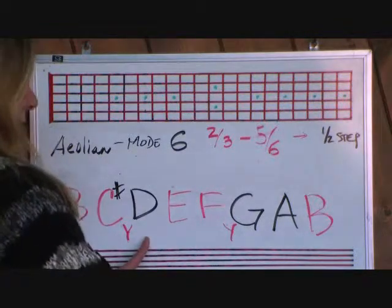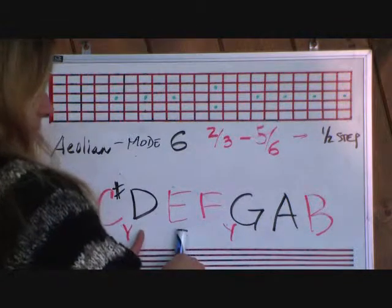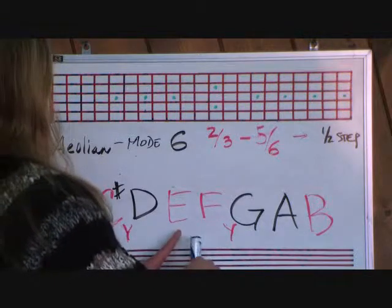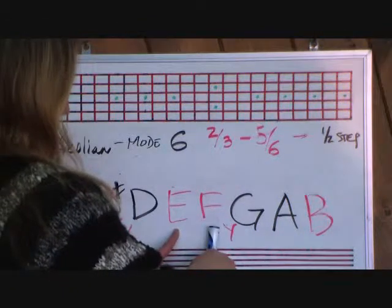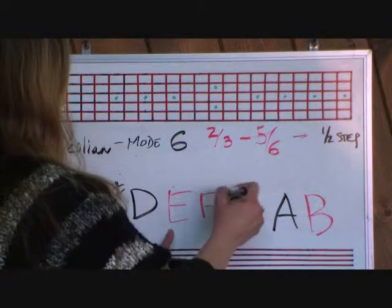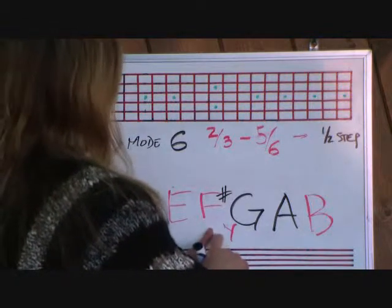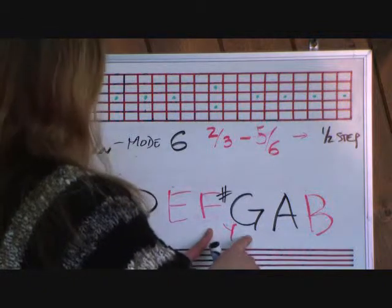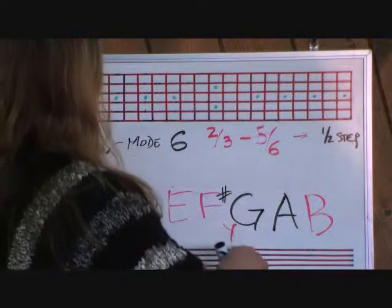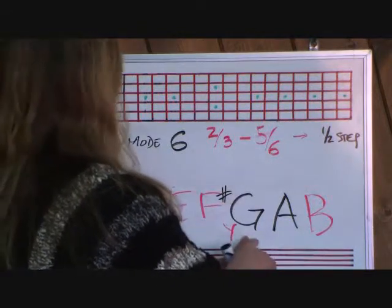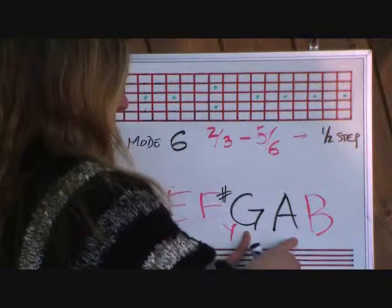Third step of the scale is D, fourth is E — needs to be a full step, and it already is, so you leave that one alone. Starting with the fourth to the fifth step, E to F, needs to be a whole step, so we do need to apply a sharp to make it a whole step. Moving on to steps 5 and 6: F sharp to G is a half step, so we leave that alone. The sixth to seventh step, G to A, needs to be a whole step — that one is a whole step, we leave that alone.